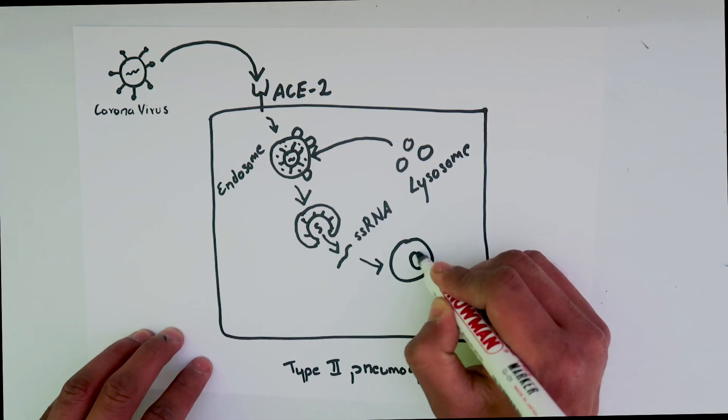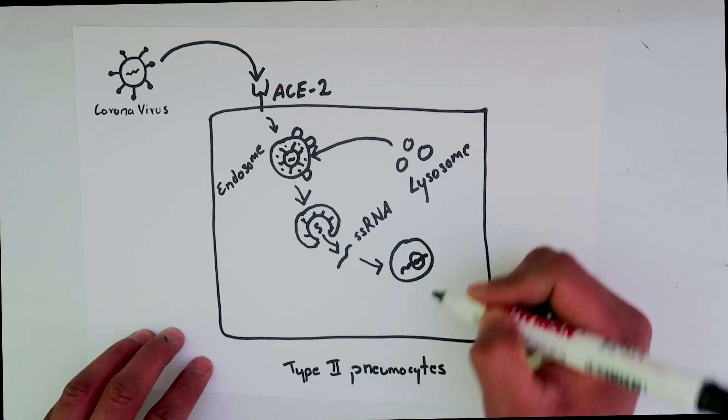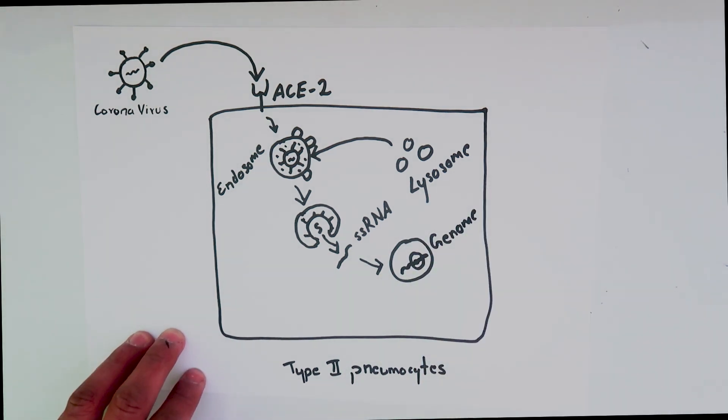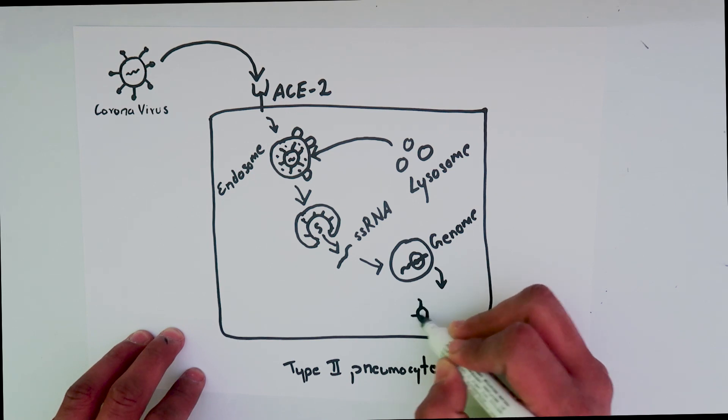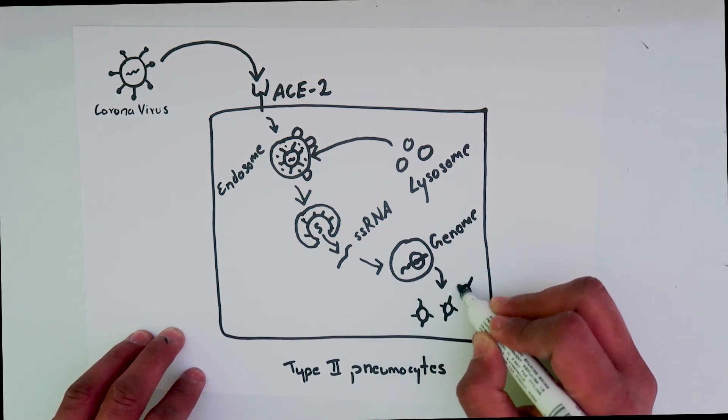This RNA binds with the nuclear genome and forms new virus particles, and that's how the virus multiplies inside the cell. These viruses will burst out of this cell and infect other cells.